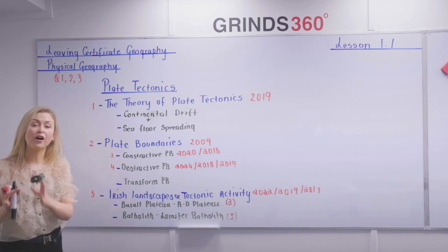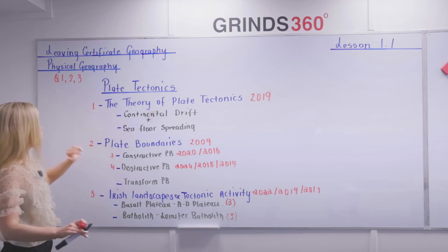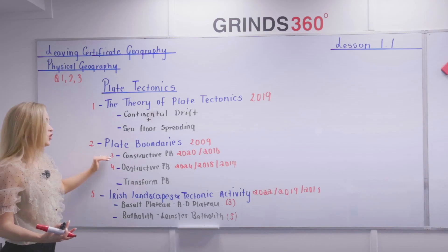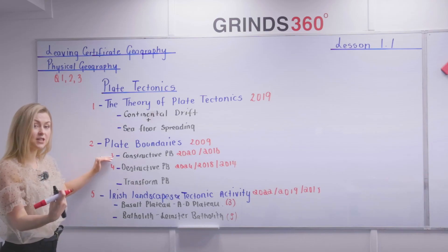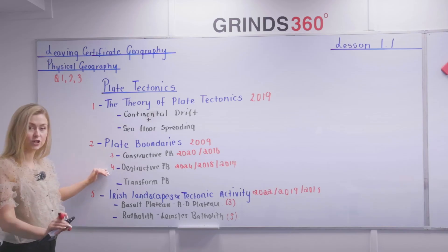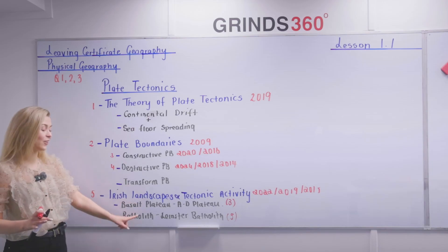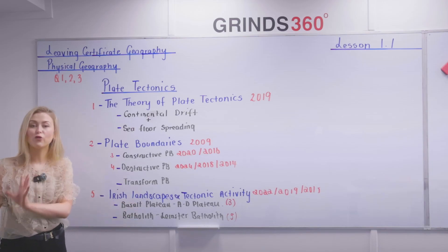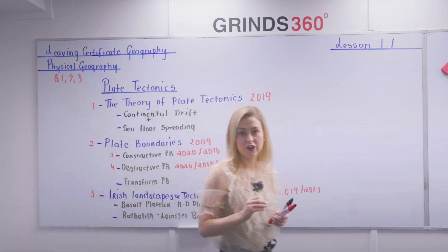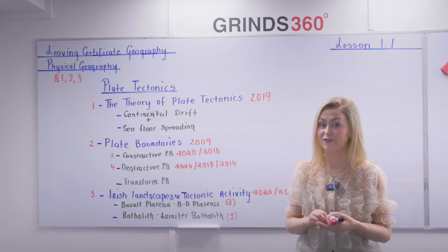So you have five distinct essays to learn: number one, the theory of plate tectonics; number two, plate boundaries; number three, constructive plate boundaries, recycling the material from essay two; number four, destructive plate boundaries; and number five, Irish landscapes and tectonic activity. The good thing is there are two full other essays where this material can be recycled. Later on in this chapter, we're going to be looking at the different style questions.